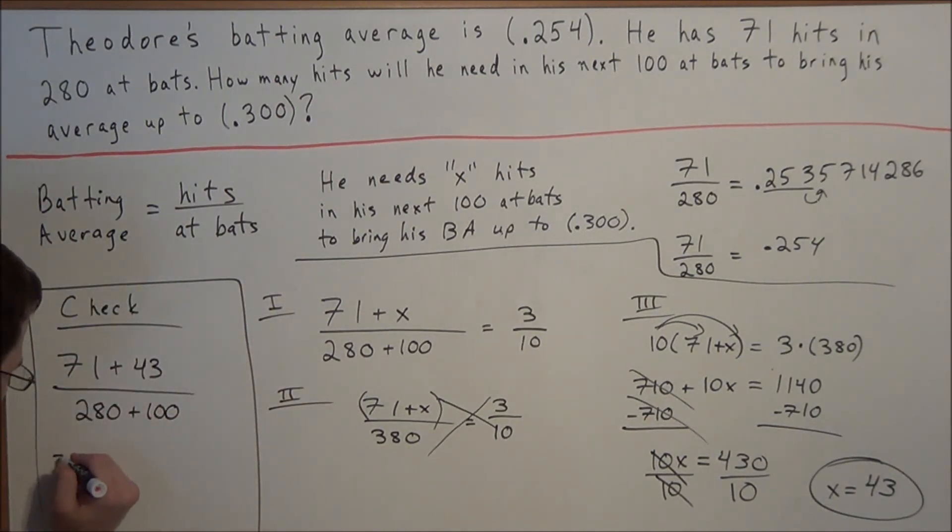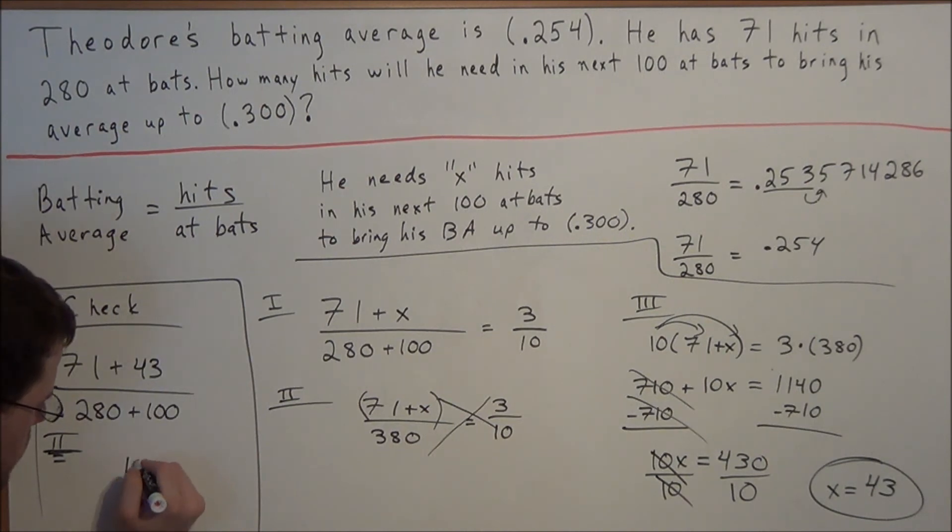So 280 plus 100. So now in the next line, this simplifies to, so we'll call this 1, we'll call this 2. So these numbers simplify to, well this is 114 in the numerator. 71 plus 43 is 114, and in the denominator we have 380.